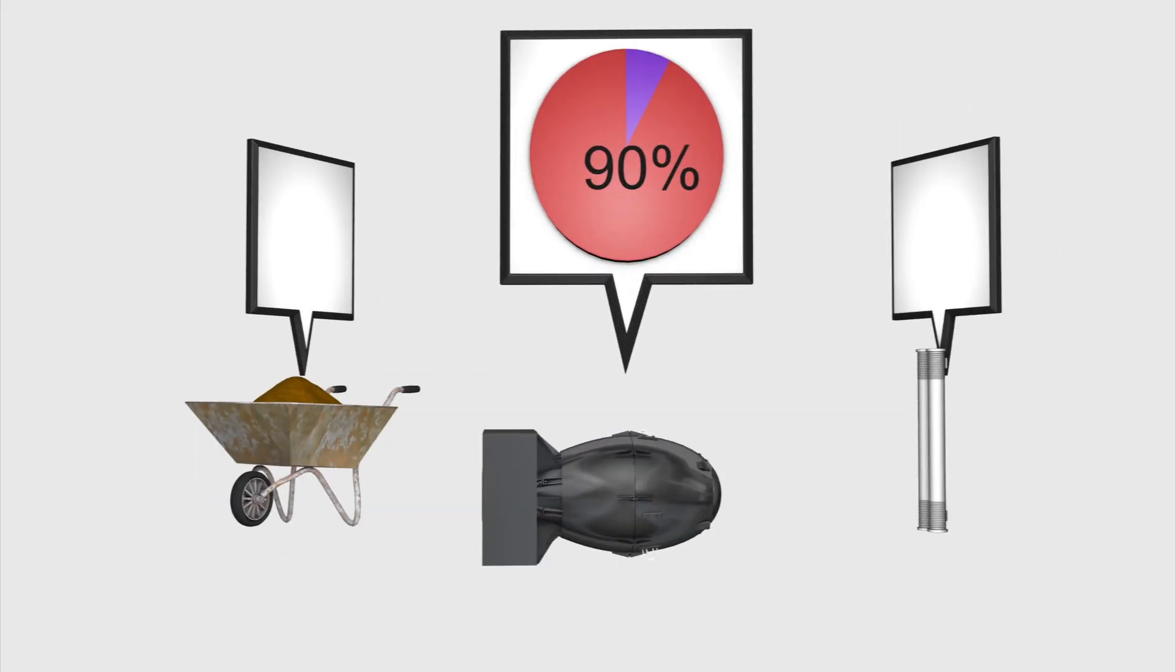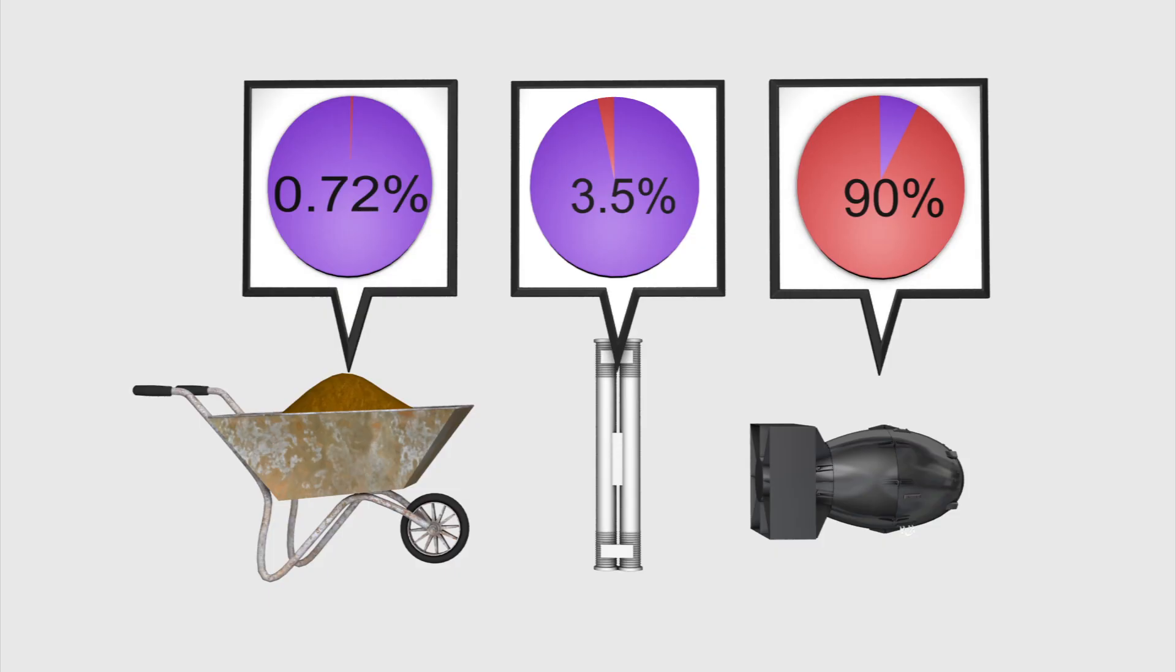The level of uranium-235 isotope in uranium ore is 0.72%. It is 3.5% in nuclear plant fuel rods and 90% in nuclear bombs.